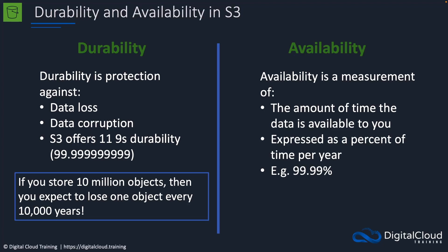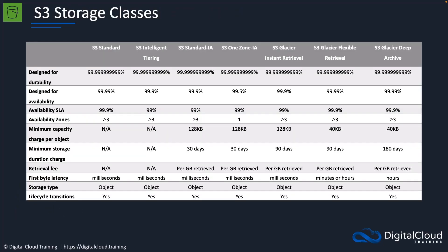For example, 99.99%. When you look at the storage classes, you'll see that durability and availability are a couple of the characteristics of each storage class that you might need to think about when determining which one to use. Looking at the storage classes, the top two elements are designed for durability and designed for availability. From a durability perspective, every single one of these storage classes offers 11 nines of durability, so your data is always safe against loss.